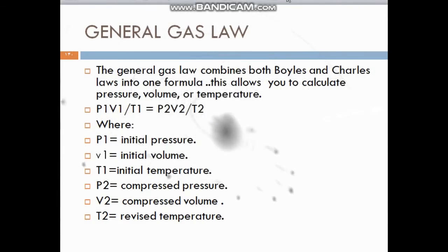The general gas law combines both Boyle's and Charles' laws into one formula. This allows you to calculate pressure, volume, or temperature. And here we have our equation: P1 multiply V1 divided by T1 equals P2 multiply V2 divided by T2.